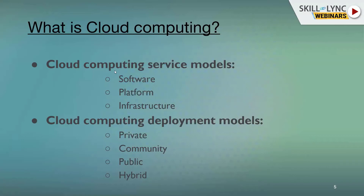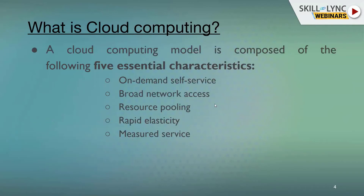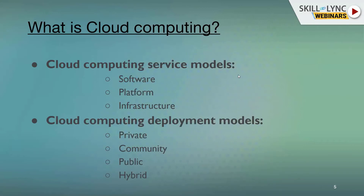These are the cloud computing service models. There are three models: software as a service, platform as a service, and infrastructure as a service. There are also four computing deployment models: private, community, public, and hybrid. We will see all these characteristics, service models, and deployment models in detail in the other slides.